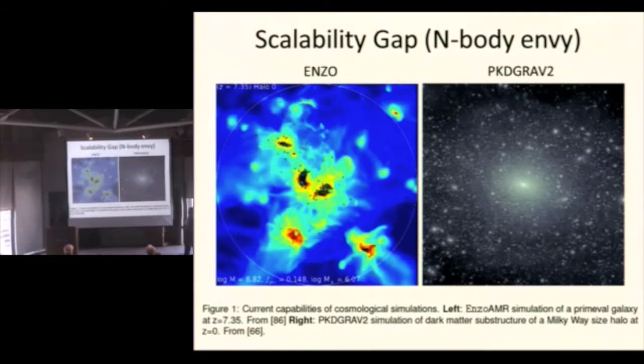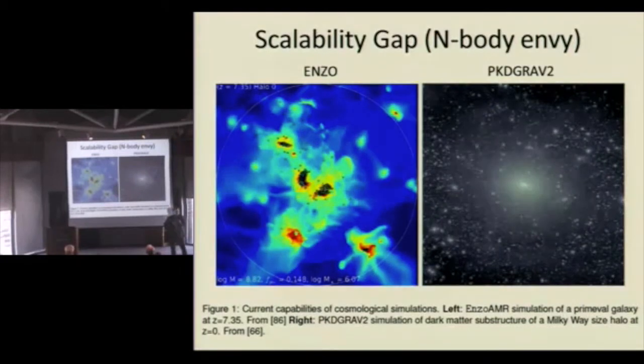And so basically Enzo is at the end of the line in terms of its useful lifetime as a high-end code. It's great for Terra scale applications, but we can't get there. Now, why can this get there? It's because, in my view, it is using an intelligent data structure that can be mapped, partitioned and mapped to a parallel computer.